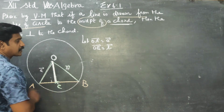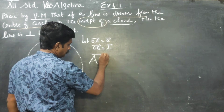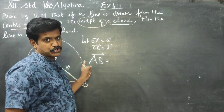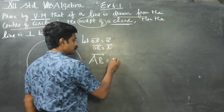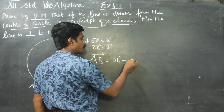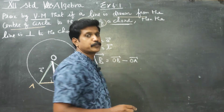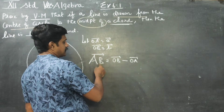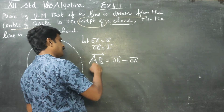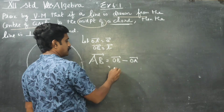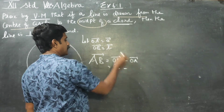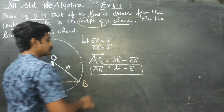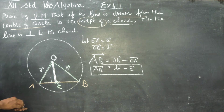From 11th standard, AB vector equals position vector of B minus position vector of A — that is, end minus starting. So OB vector is 'b' vector and OA vector is 'a' vector. Therefore AB vector equals b minus a.